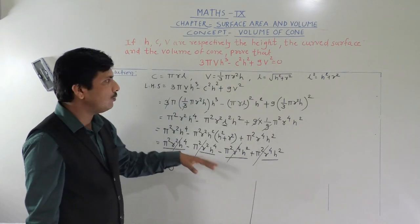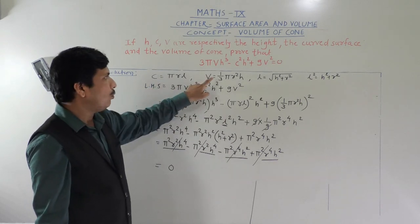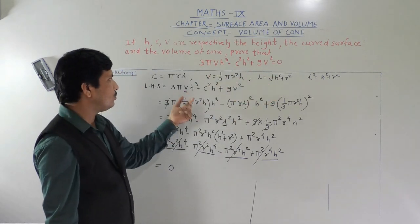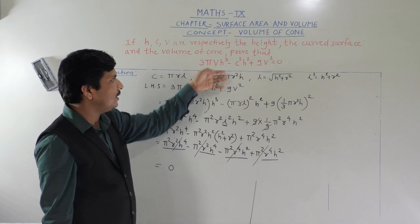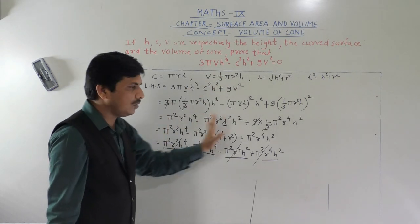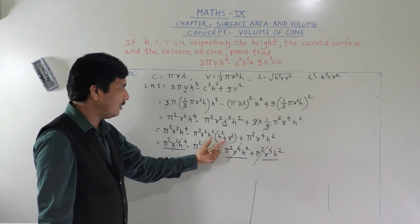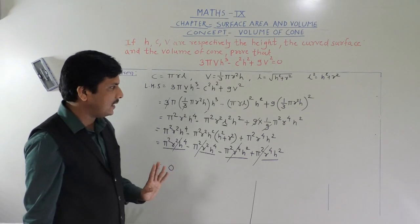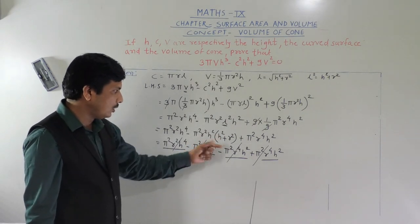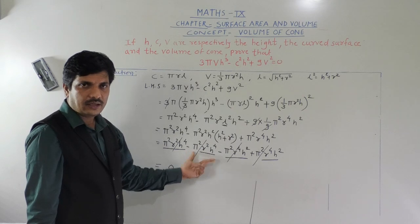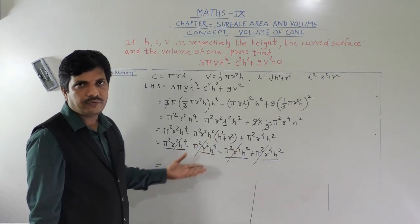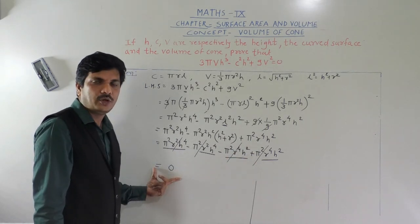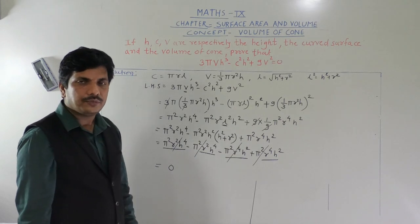This is a simple proof: we used the formulas for curved surface area, volume, and slant height. We substituted into LHS, found the product, replaced l² by h² + r², expanded, and observed that all terms are additive inverses and cancel, giving 0 which equals our RHS. Thank you.